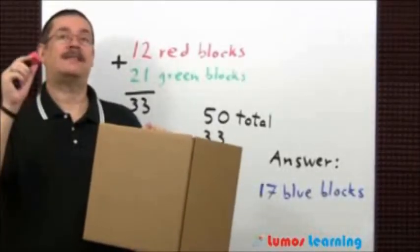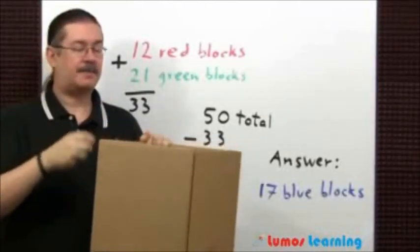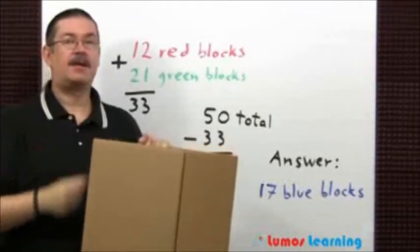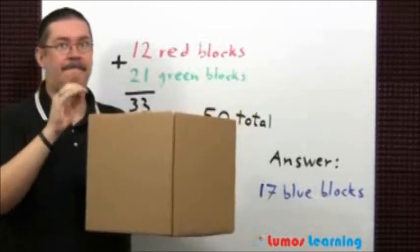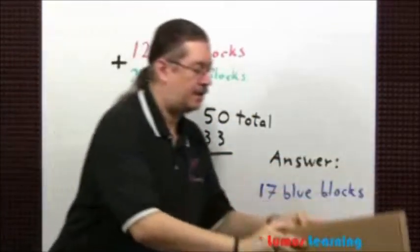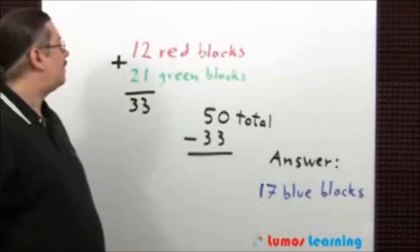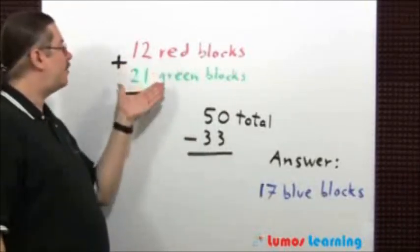First off, we know we have 17 red blocks and 21 green blocks. We would like to know how many blue blocks are in this box. How can we figure that out? Well, first off, let's go ahead and add up the number of red and green blocks.